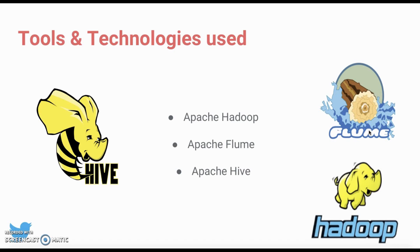Apache Hadoop is a framework that allows distributed processing of large datasets with minimal programming. Next up is Apache Flume, which is a very reliable service used across the globe by developers for streaming real-time data and transferring the data into the Hadoop Distributed File System. Apache Hive is a data warehouse software which facilitates reading, writing, and managing large datasets using SQL.